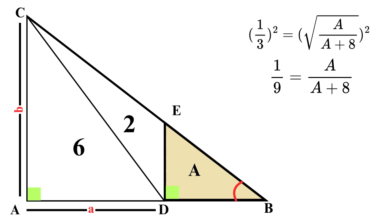By cross-multiplying, we get that 1 times the quantity A plus 8 equals 9 times A. This simplifies to A plus 8 equals 9A. Subtracting A from both sides, we get 8 equals 8A. From this, we find that the area of our small triangle DBE must be equal to 1 square unit.